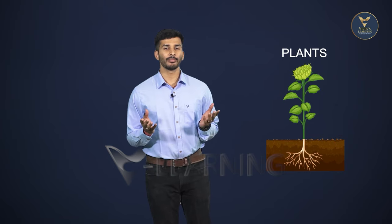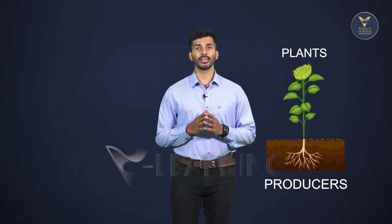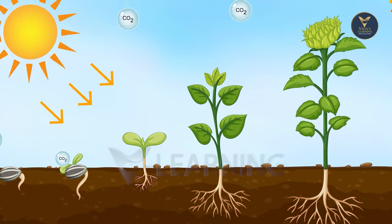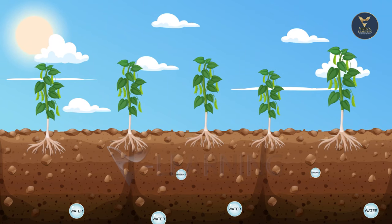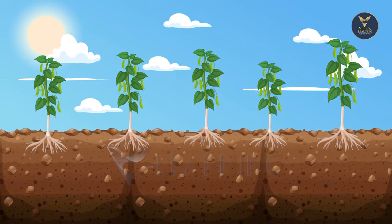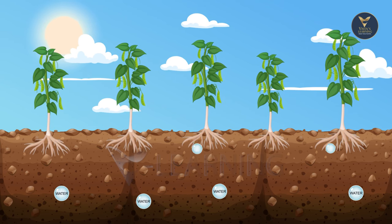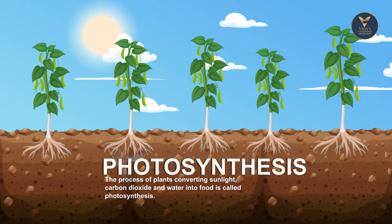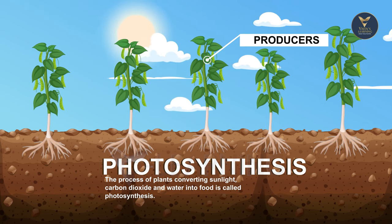Plants are the producers of food. Plants get their energy from sunlight and carbon dioxide from the air. Can you see how the minerals and water from the soil are making the plants grow? This process is called photosynthesis. And because plants produce their own food, they are known as producers.